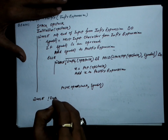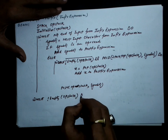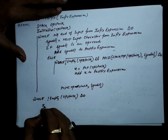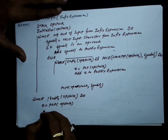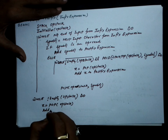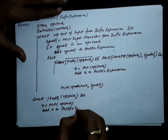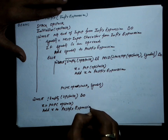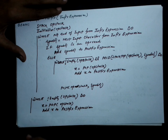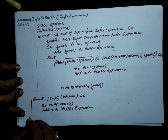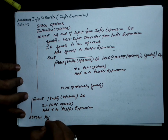Once we are finished with all the input symbols, some symbols may remain on the stack. So: while not empty OP stack, do — pop the stack and add the popped symbol to the postfix expression. Once this entire operation is completed, we return the postfix expression.